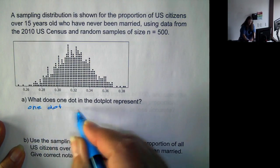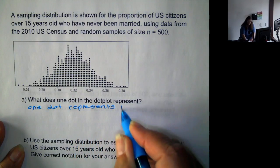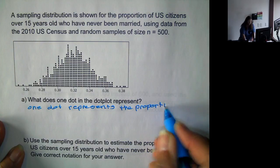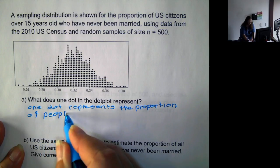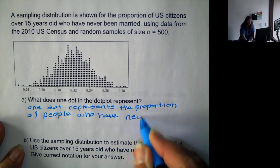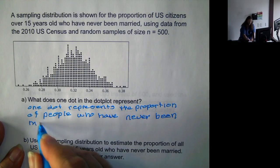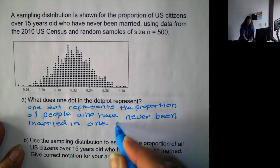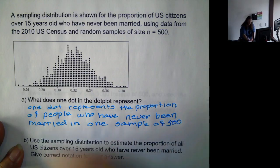One dot represents the proportion of people who have never been married in one sample of 500 people.